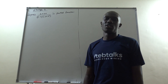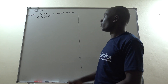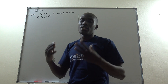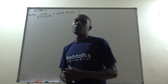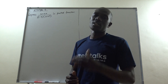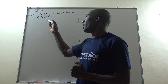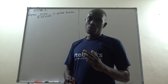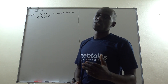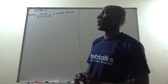Welcome back from that short break. We are still moving on with more examples, still on partial fractions, but for the case where the denominator has got a quadratic factor which cannot be factorized.